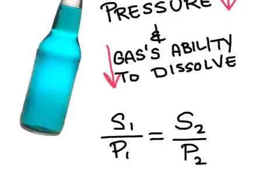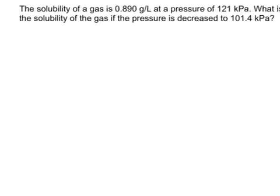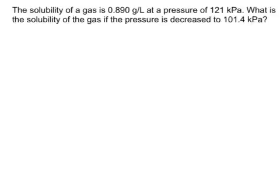Solubility is usually measured in grams per liter. That is, the grams of gas per liter of solution. Let's look at an example of a problem. This problem says the solubility of a gas is 0.90 grams per liter at a pressure of 121 kilopascals. What is the solubility of the gas if the pressure was decreased to 104 kilopascals?